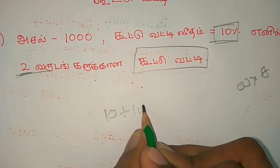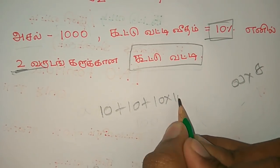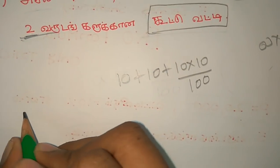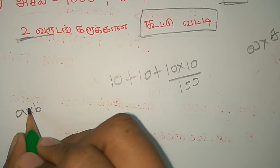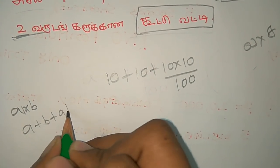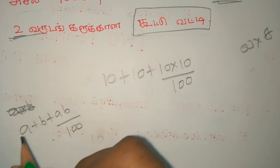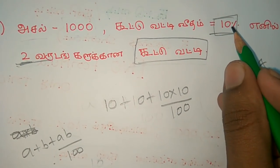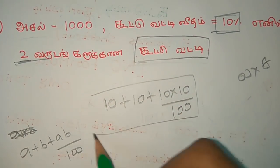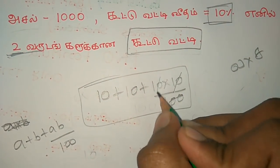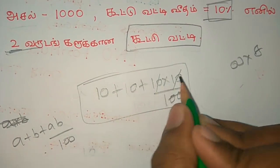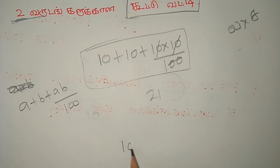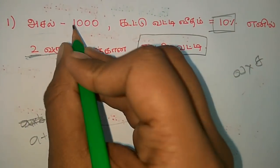10 plus 10 plus 10 into 10 by 100. Let's write this down. A into A plus B plus AB by 100. A plus B plus AB by 100. Now we can write this down. So come down here — please write this down. If you want to write this down: 1 by 100.